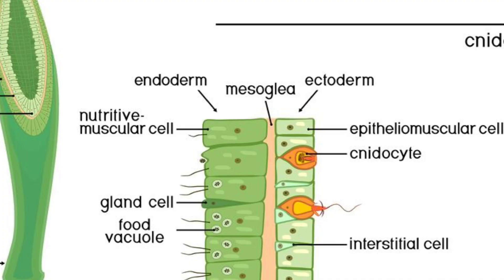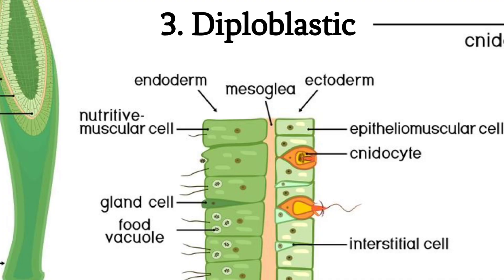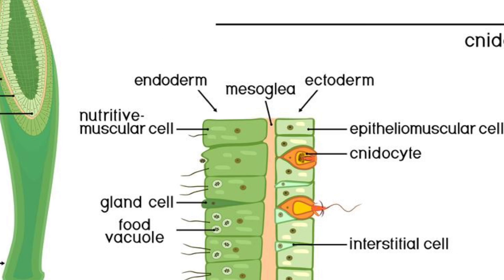3. Diploblastic: Cnidarians are diploblastic, meaning they have two embryonic germ layers — the ectoderm (outer layer) and the endoderm (inner layer).